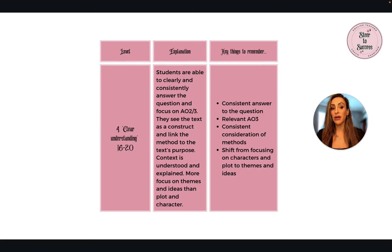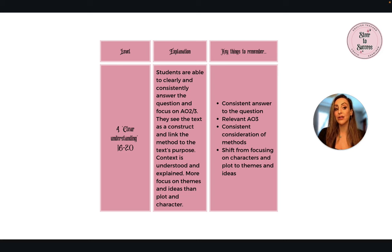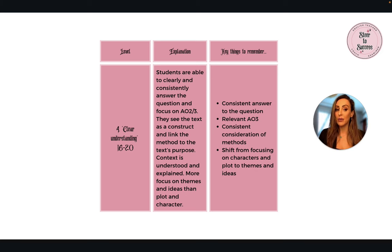Level four is where we're more into that solid grade five, moving towards grade six. This level says clear understanding — you are very clear the whole way through in your response to the question. Students are able to clearly and consistently answer the question, focusing on AO2 and AO3: that's your methods, the impact of those on the reader, and why the writer has done things. They link to context, see the text as a construct — something the writer has done on purpose — and link the method to the text's purpose. Context is understood and explained, but maybe not yet used to fully develop the response.